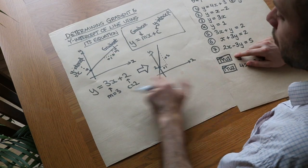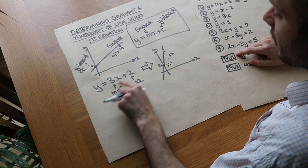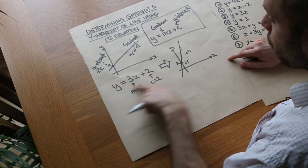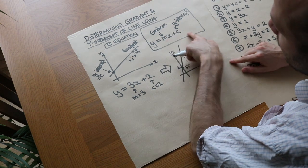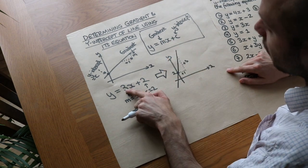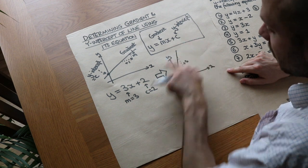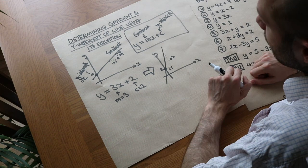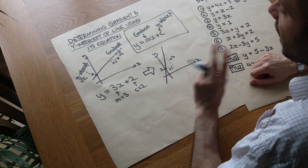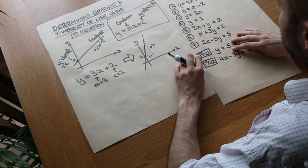So in this video, we're just going to say: if we already have the equation, how can we work out what the gradient is and what the y-intercept is? If it's already in the form y equals mx plus c, then it's very easy — we just look at the number in front of the x to get the gradient, and we just look at the constant term, the non-x term, to get the y-intercept. If an equation is not in this particular form but it's still a straight line, we just need to rearrange it to get it into this form.